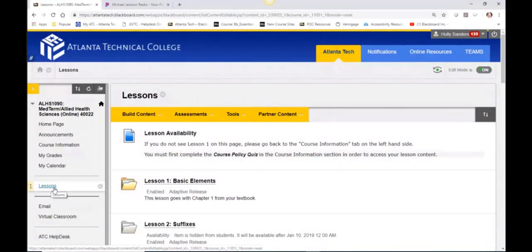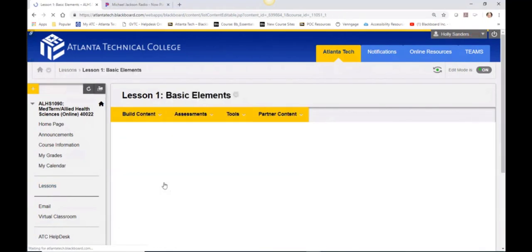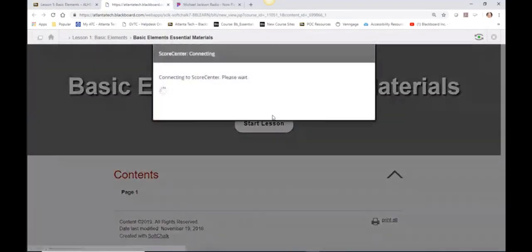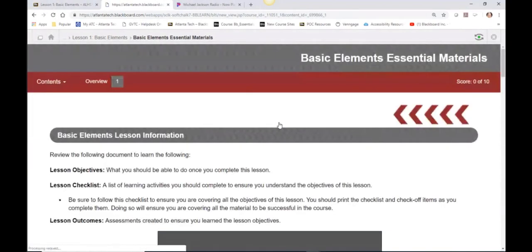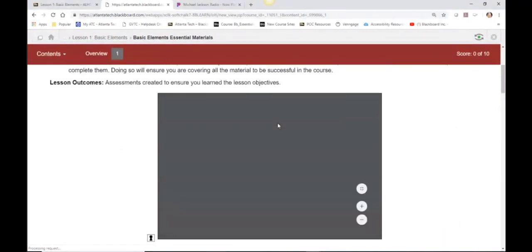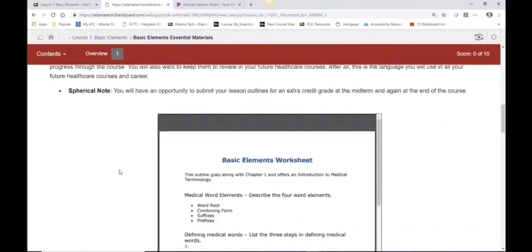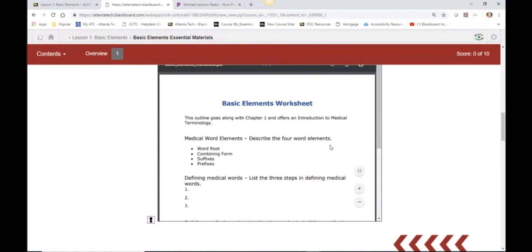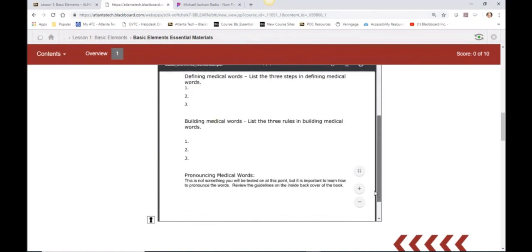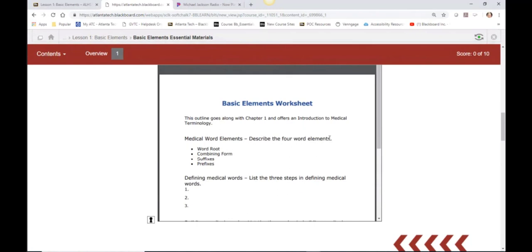So when you come into your Blackboard course, once you complete the course policy quiz of course, you will go into lesson one, into your basic essential materials, start going through your check sheets, which will make sure that you're on the right road for success, and then complete your worksheets. And I'm hoping now while I'm scrolling through this worksheet, things like word root, combining form, suffixes, prefixes, defining medical words, building medical words look familiar. As you can see, everything we just did is basically lesson one. If there's anything extra in your book, such as specific terms, even ones we just went over, you are not responsible for them for this. For every single lesson, you're only responsible for what's on the worksheet.